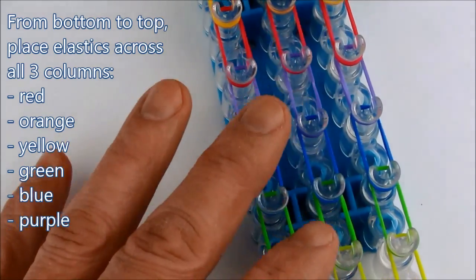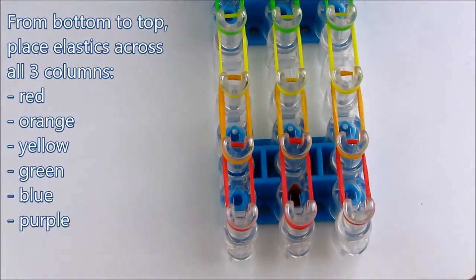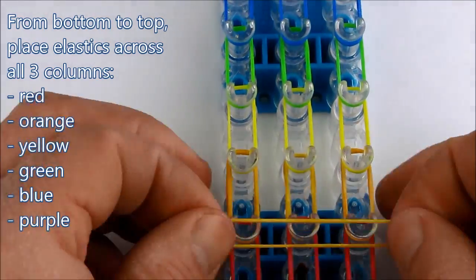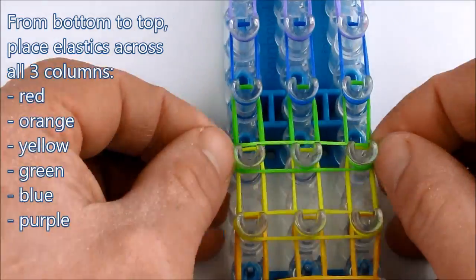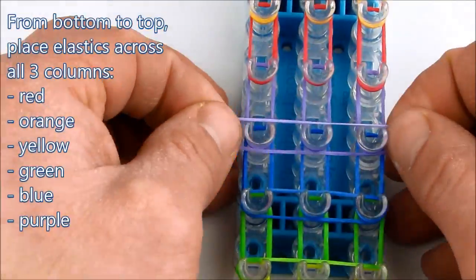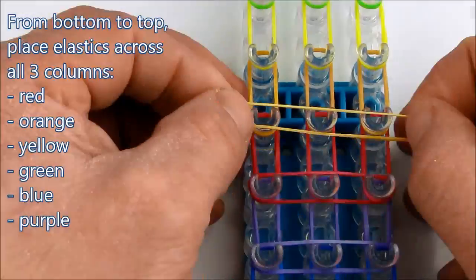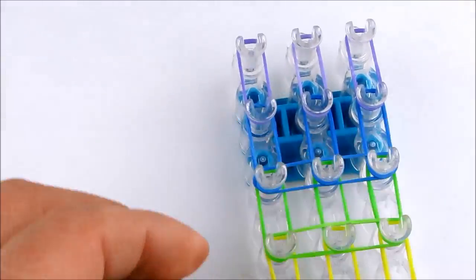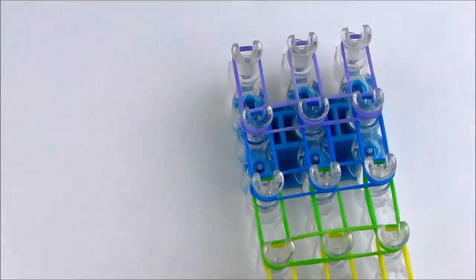As we did before, we will place elastics across all three columns. Once again, red, orange, yellow, green, blue, and purple, until we reach the top of the loom again. And once again, we don't put any elastics on the top row of pegs.